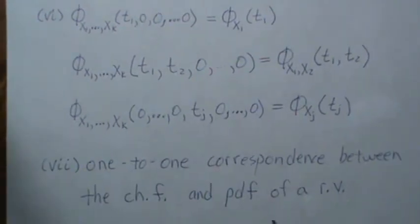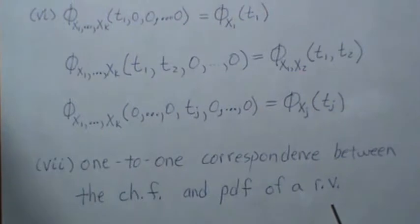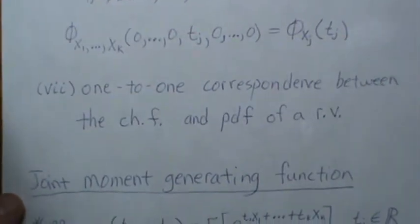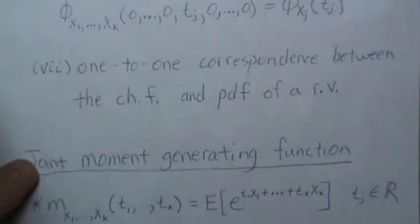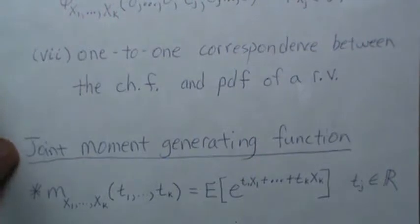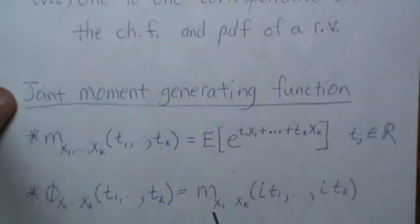There is a one-to-one correspondence between the characteristic function and the PDF of a random vector. So if we know the characteristic function, we can back, there's an inversion formula for the PDF. And if we know the PDF, we can derive the characteristic function by that expected value that we looked at earlier. Now this is a characteristic function, but they also have a joint moment generating function defined very similar, but without the I in here. And now these two are related. So if you take the moment generating function and plug in IT1 through ITK, you get back the characteristic function.